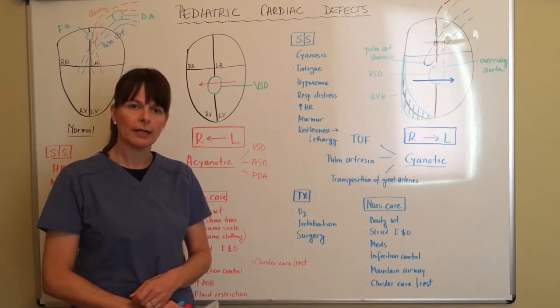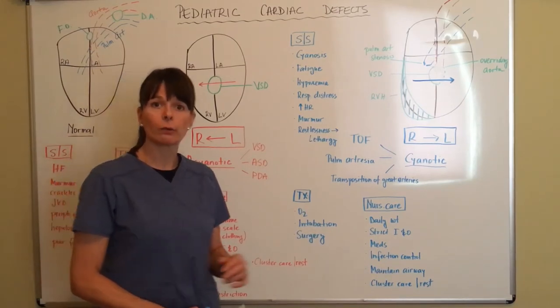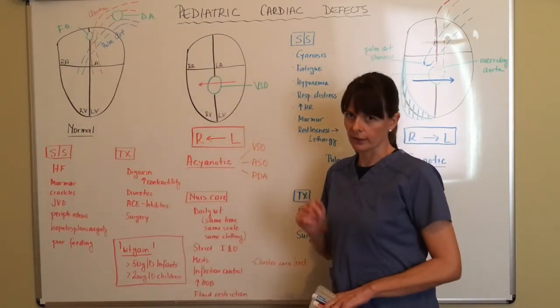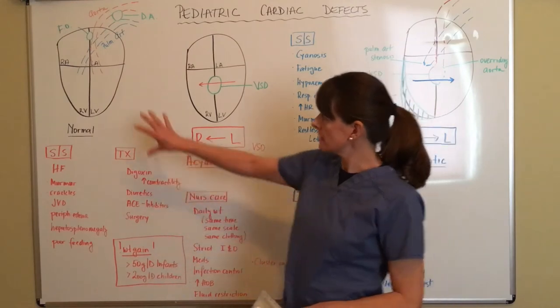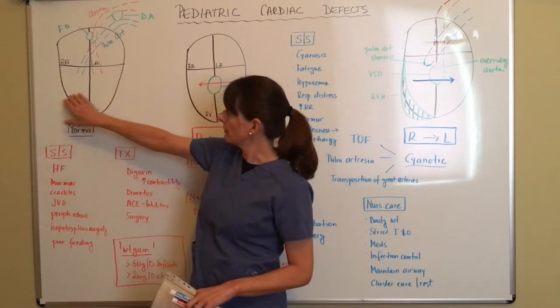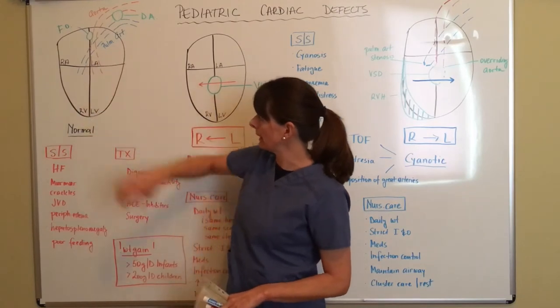So let's go ahead and start by looking at the normal circulation. I've drawn out some hearts there. I'm not the best artist, but you can see this is basically a normal heart. You can see the right atrium, right ventricle, left atrium, and left ventricle.